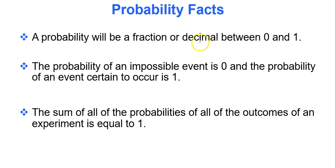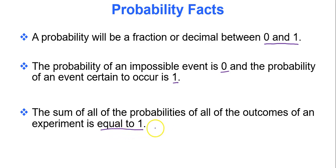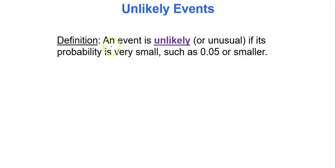Some basics for probability: a probability will always be between 0 and 1, whether it's a fraction or decimal — otherwise you did something incorrectly. The probability of an impossible event is 0, meaning it will not happen, and the probability of an event certain to occur is 1. The sum of all probabilities of all outcomes of an experiment equals 1. For example, flipping a coin gives P(heads) = 0.5 and P(tails) = 0.5, which sum to 1. An event is considered unlikely or unusual if its probability is 0.05 or smaller.